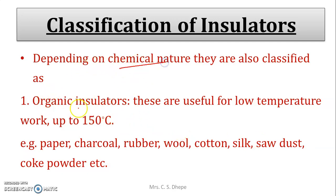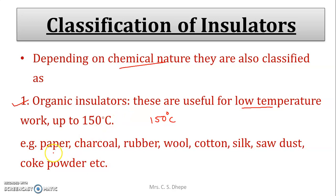Depending upon chemical nature, insulators are classified as organic and inorganic. Organic insulators are useful for low temperature work — they can be used up to 150 degrees Celsius. Above 150 degrees, organic insulators cannot be used. Examples of organic insulators include paper, rubber, wool, cotton, silk, and sawdust.